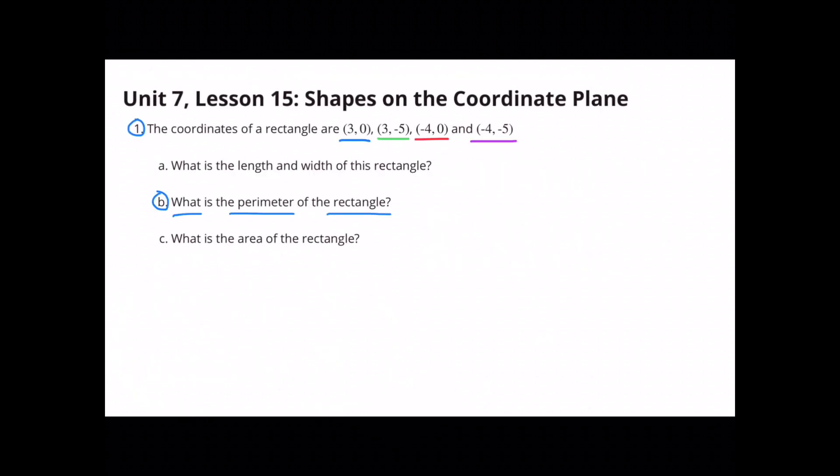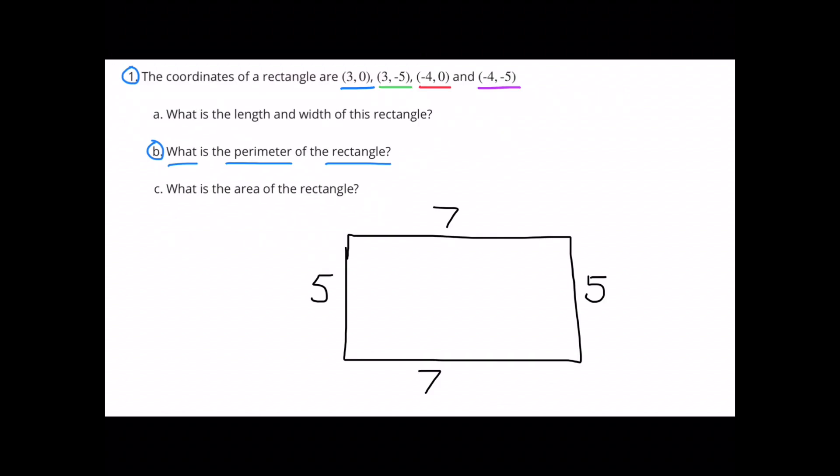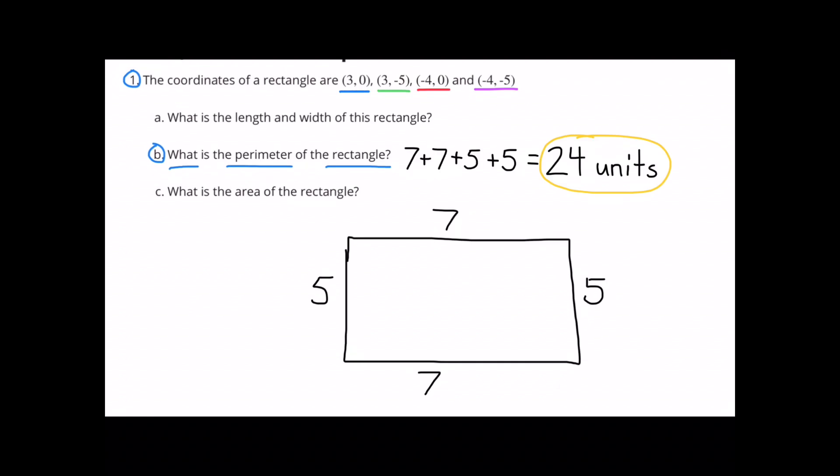What is the perimeter of the rectangle? With the length being 7 and the width being 5, we just add up the lengths and the widths. So 7 plus 7 plus 5 plus 5. The perimeter of the rectangle is 24 units.